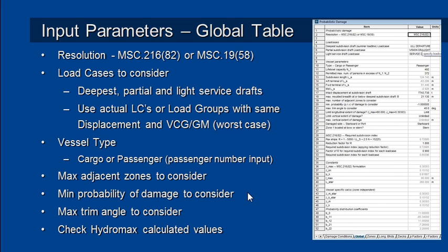As you define your zones of damage and combinations, you'll find that some damage conditions have very low probabilities of occurring — either because they're very small or because of where they're located on the vessel. You can enter a minimum probability value that should be considered. If the probability of damage is lower than that, those analyses will be skipped and your analysis will be faster.